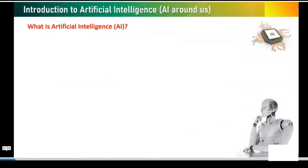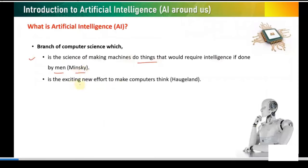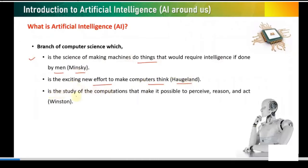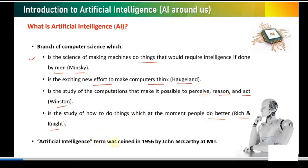Now let's see what Artificial Intelligence is. It's a branch of computer science. It's the science of making machines do things that would require intelligence if done by a human, as said by Minsky. It is exciting new efforts to make computers think, as said by Harkland. It is the study of the computations that make it possible to perceive, reason and act, as said by Winston. And it is the study of how to do things which at the moment people do better, by Rich and Knight. The term Artificial Intelligence was first coined in 1956 by John McCarthy at MIT.